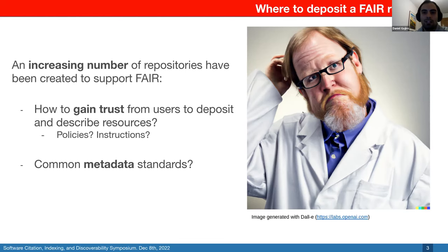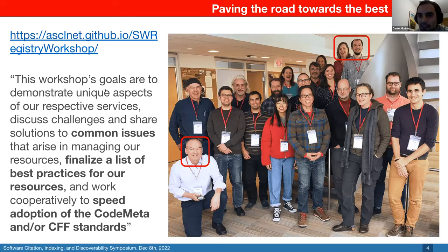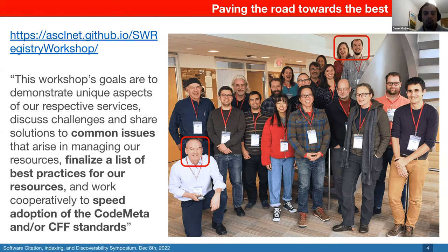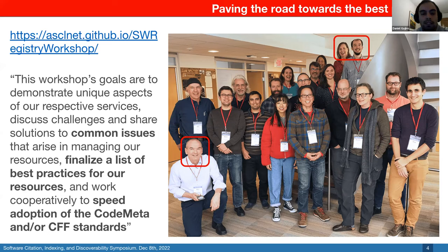In the top right of the figure you can see some of the organizers, Alice and Tom, and on the bottom left there is Mike. They organized a workshop around software repositories and registries with the goal of discussing common issues for managers of these resources, to finalize a list of best practices, and to cooperate towards the adoption of standards arising from the community — standards for describing scientific software and standards for citation, such as the Citation File Format, which has now been adopted even by GitHub. Last time I checked, there were more than 20,000 projects on GitHub with CFF files.